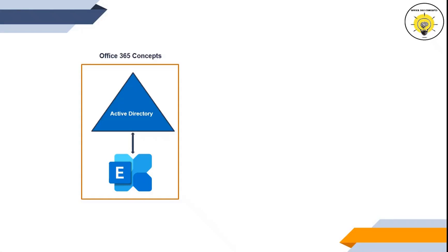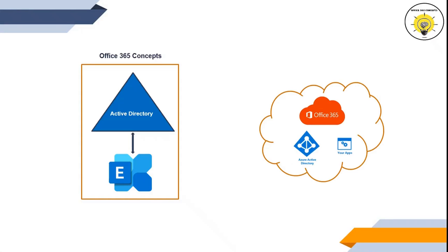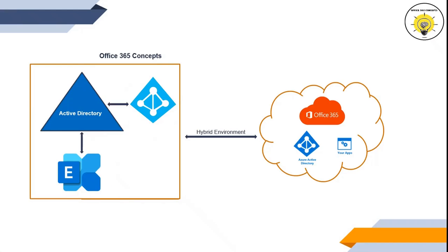Now let's understand how Azure AD Connect helps organizations meet hybrid identity goals. Assume that in your on-premise environment you have Active Directory and an Exchange Server, and you've set up an Office 365 tenant and want to deploy a hybrid environment. In a hybrid deployment model, the on-premise and Office 365 organizations act as a single organization — you can migrate mailboxes from on-premise to Office 365, control email flow from on-premise, and gain many other benefits. To achieve hybrid deployment, you need to deploy Azure AD Connect within your on-premise environment; it is one of the prerequisites.